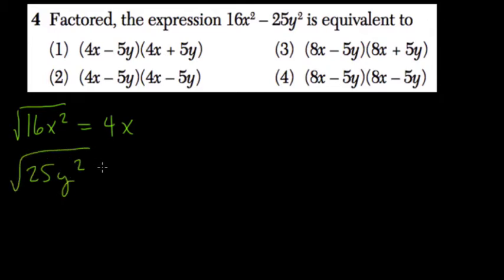25y squared is also a perfect square. Take the square root of that - if we take the square root of that, we get 5y.